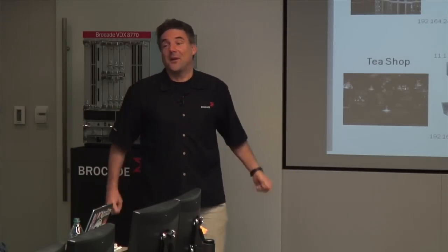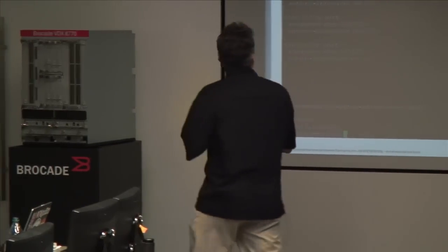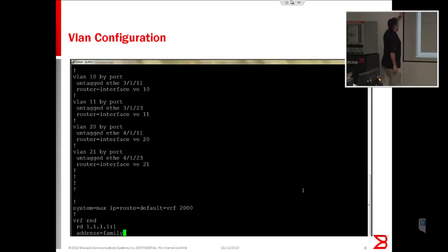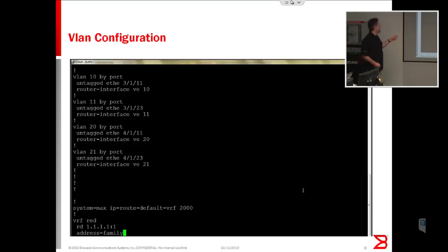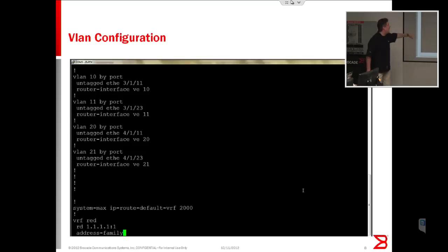You need to create separate routing instances — one per store — to route between two VLANs that have the same IP ranges. In the demo rack we have two ICX 6610s and four ICX 6450s stacked together. I've created four VLANs: VLAN 10 and 11 for the wine store, and VLAN 20 and 21 for the tea store. Each VLAN has a physical port attached and a virtual interface for inter-VLAN routing.